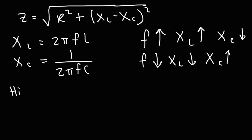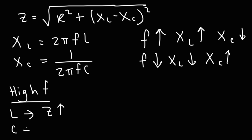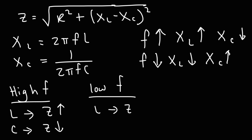At high frequencies, inductors offer a very high impedance and capacitors offer a very low impedance. At low frequencies, inductors offer low impedance to the flow of AC current, whereas capacitors have high impedance towards low frequency signals, and inductors have low impedance towards them.